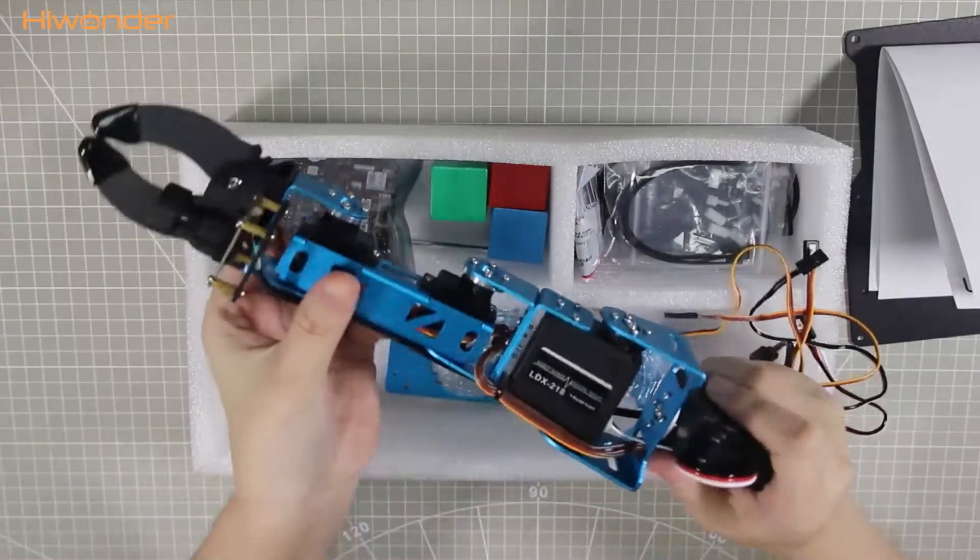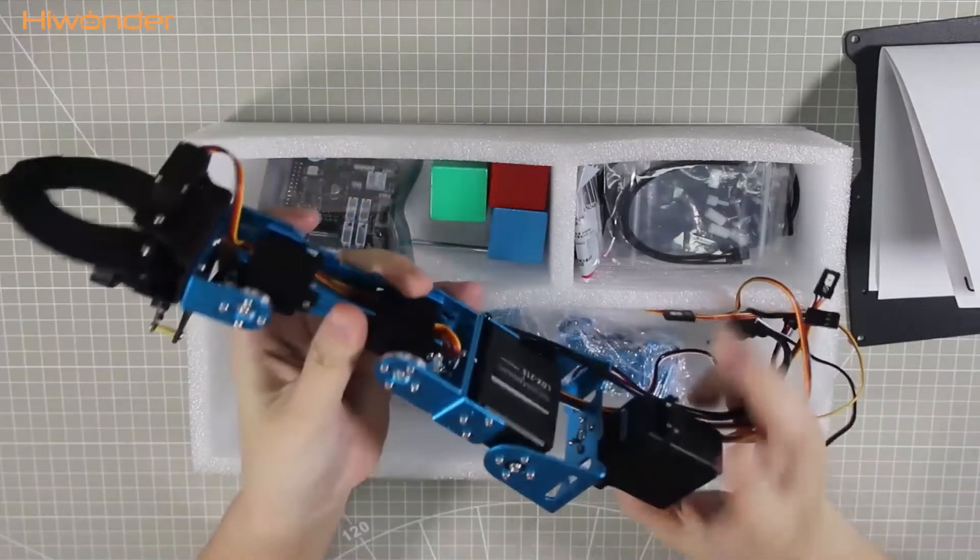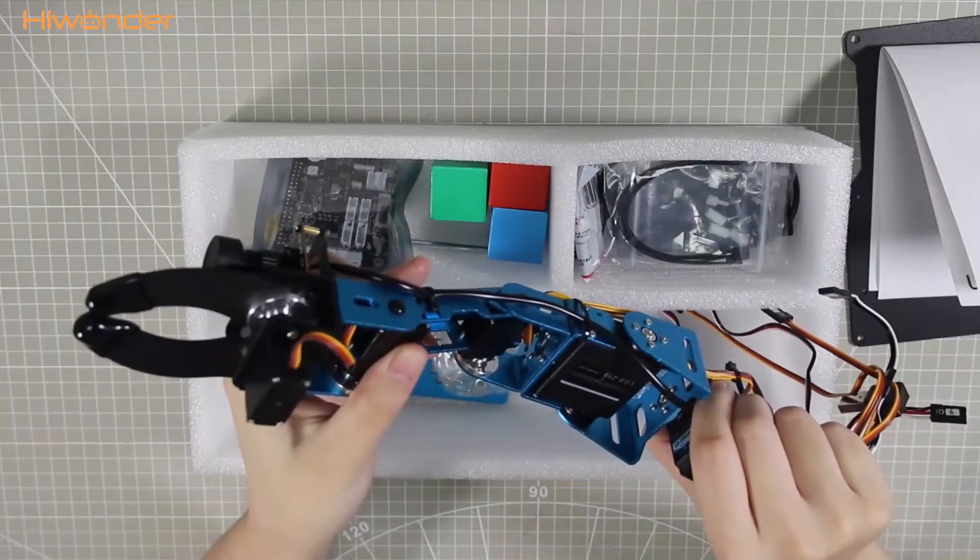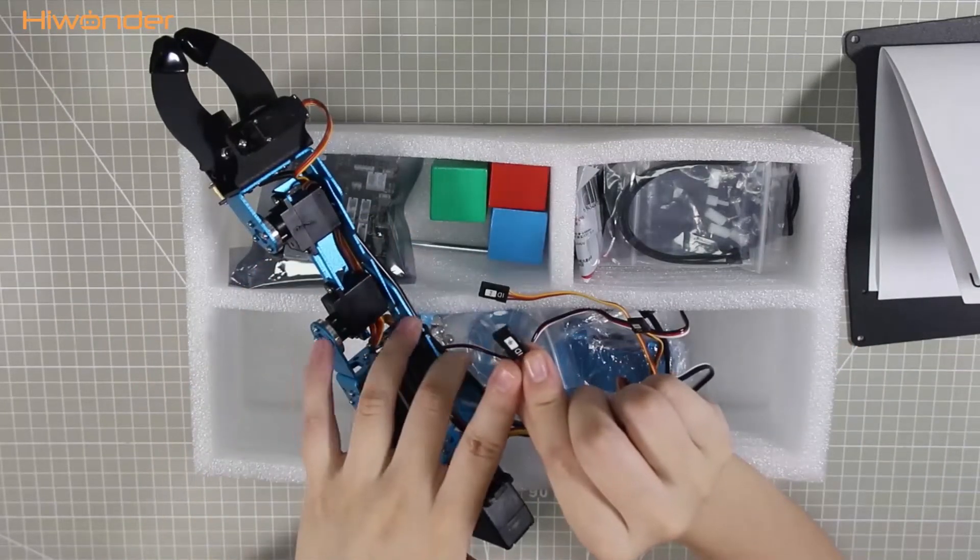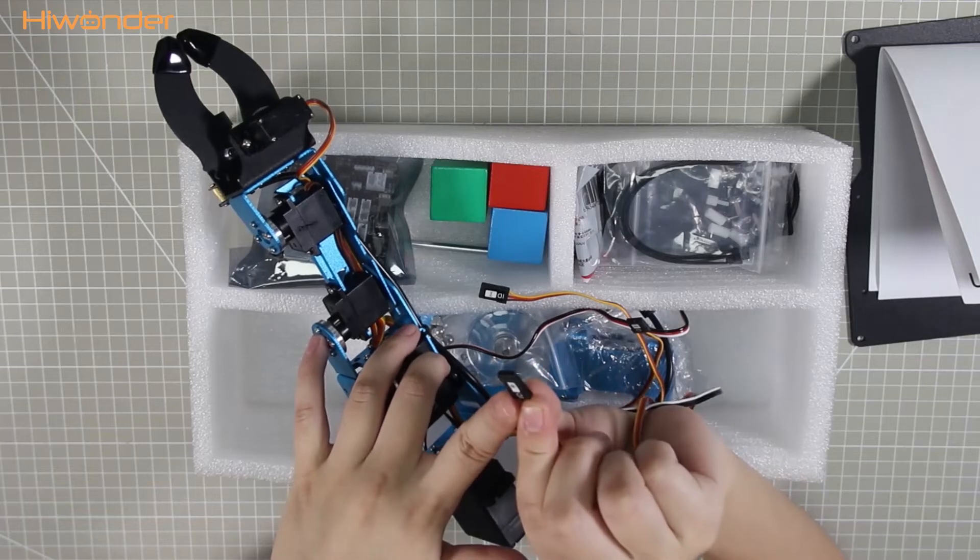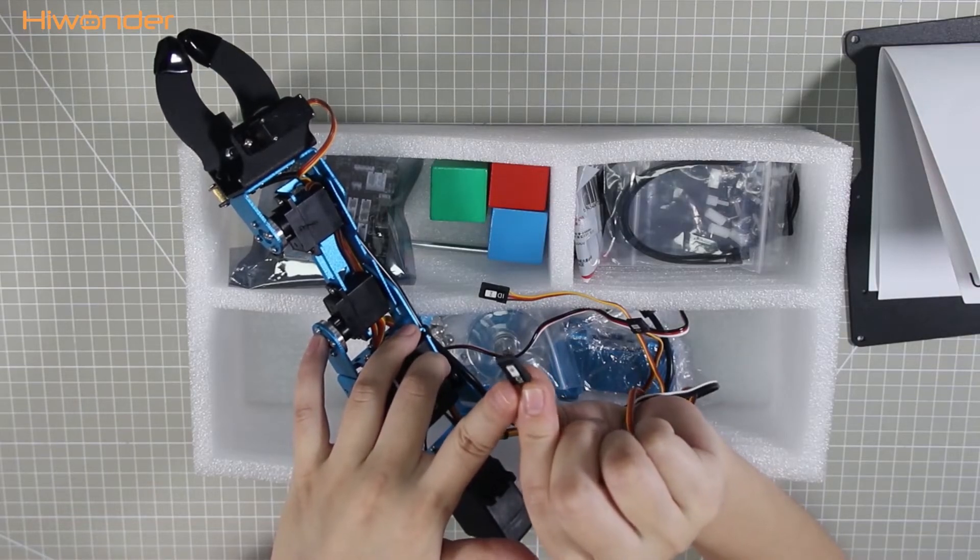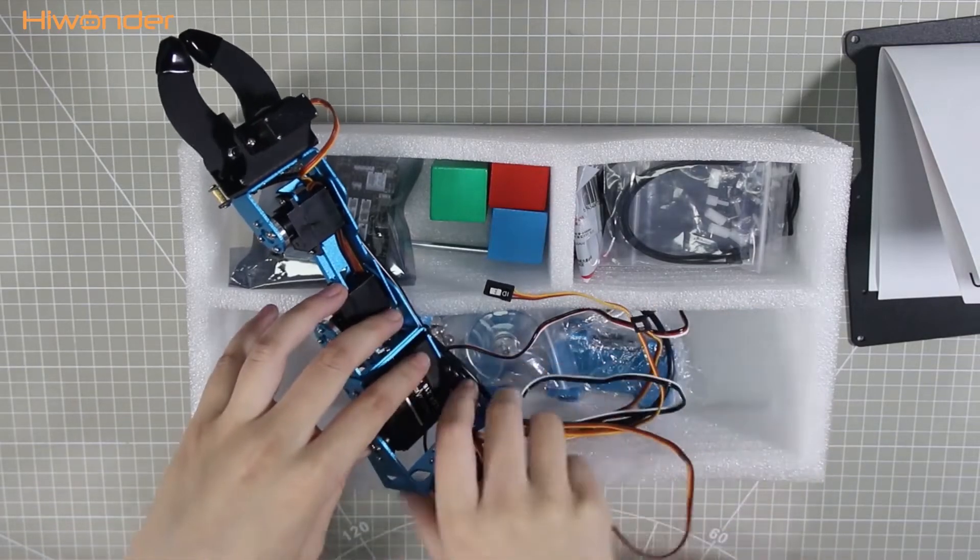This is the assembled robot arm. Please handle it with care, do not hit the camera. In addition, the servo cables have been marked with the corresponding servo ID number. You just need to connect them to the servo interfaces accordingly.